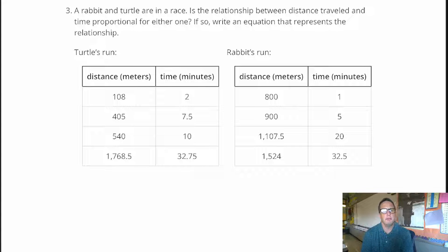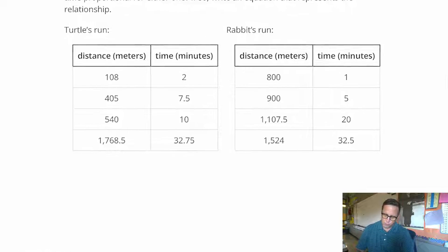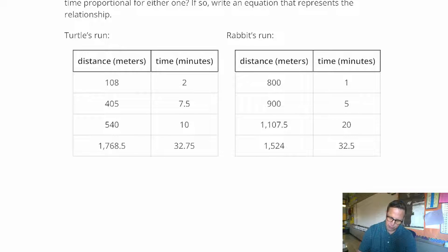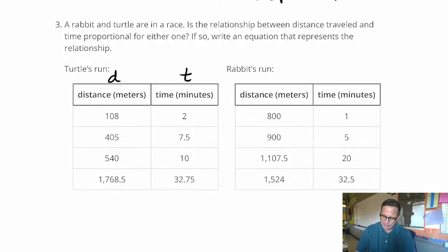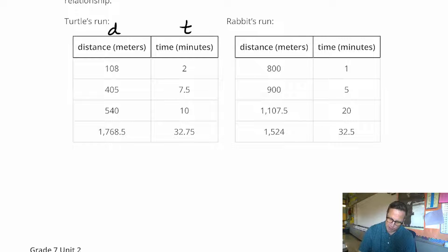For number three, we have a rabbit and a turtle are in a race. Is the relationship between distance traveled and time proportional for either one? If so, write an equation that represents the relationship. So if we look at the first one there, I'm going to designate this as D, and I'm going to call that T. So if we do 2 divided by 108.